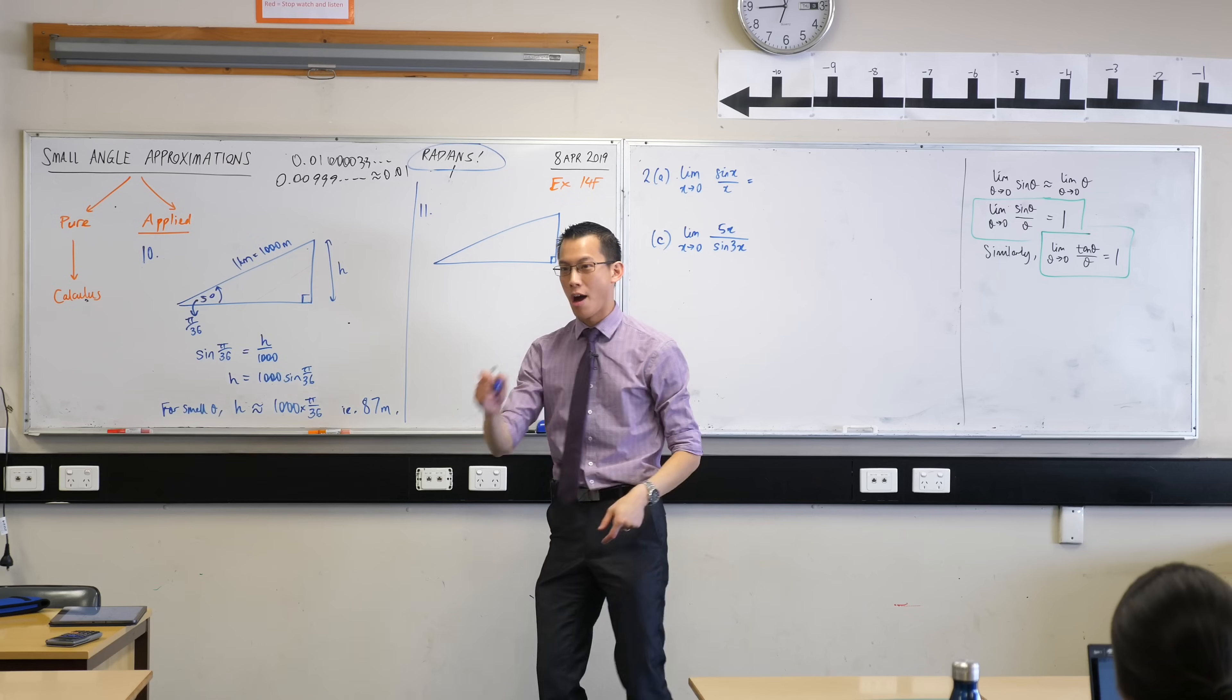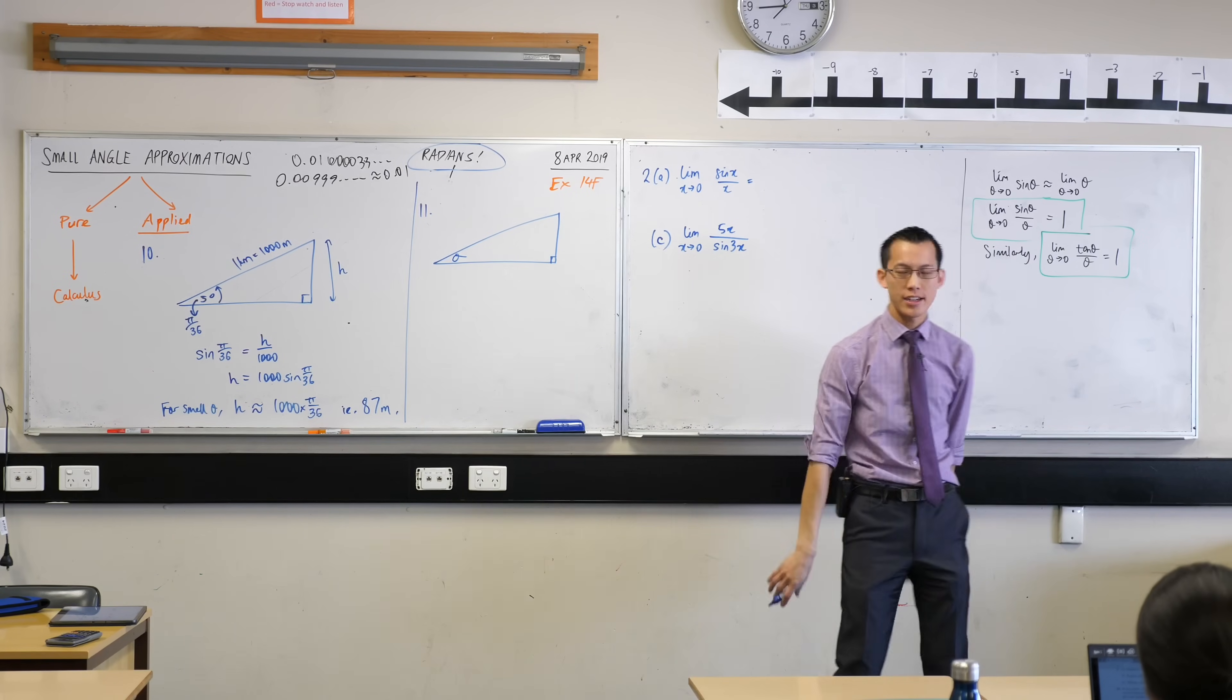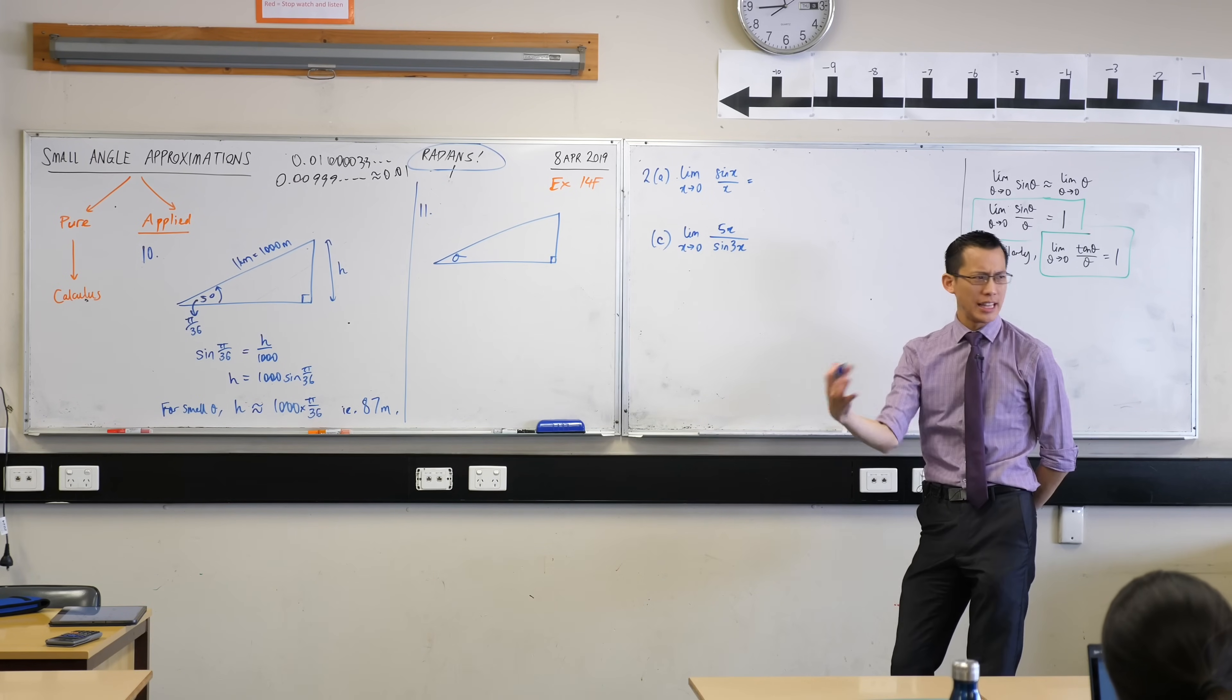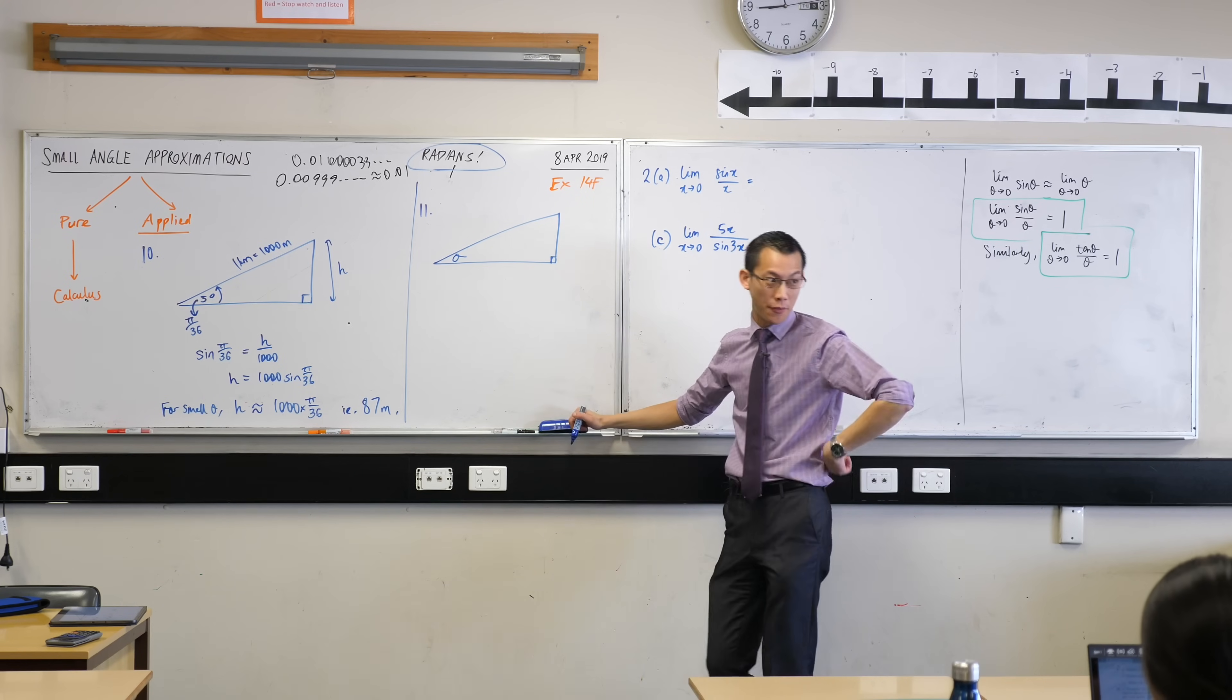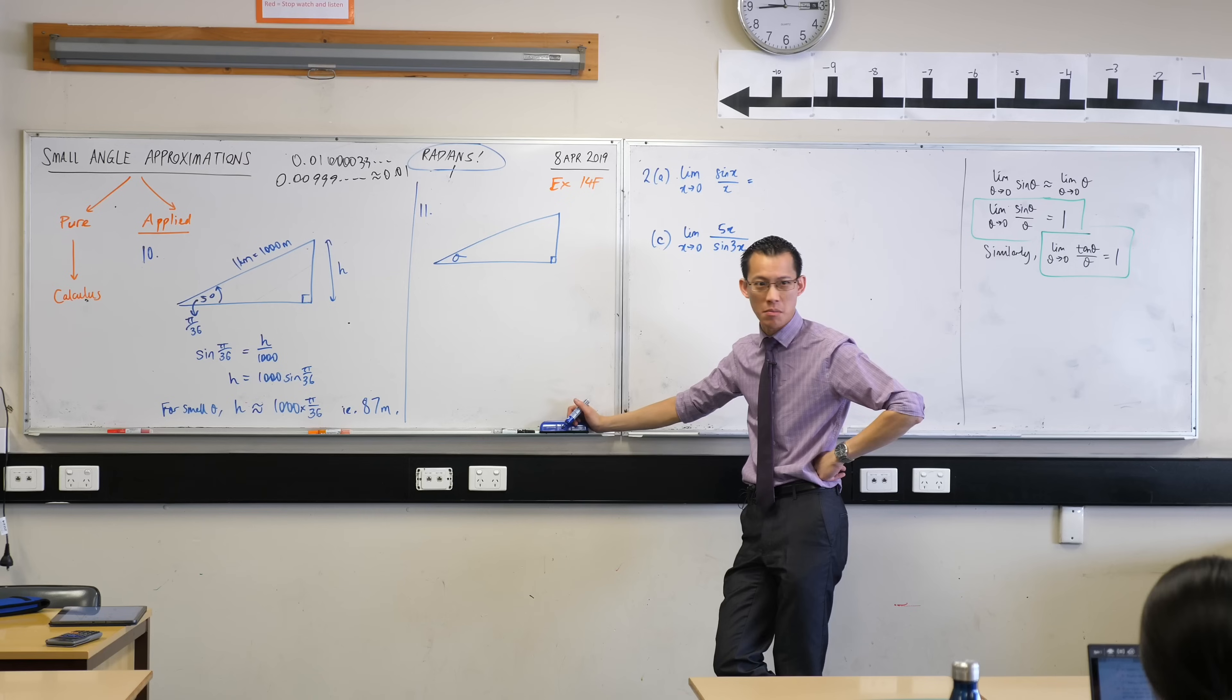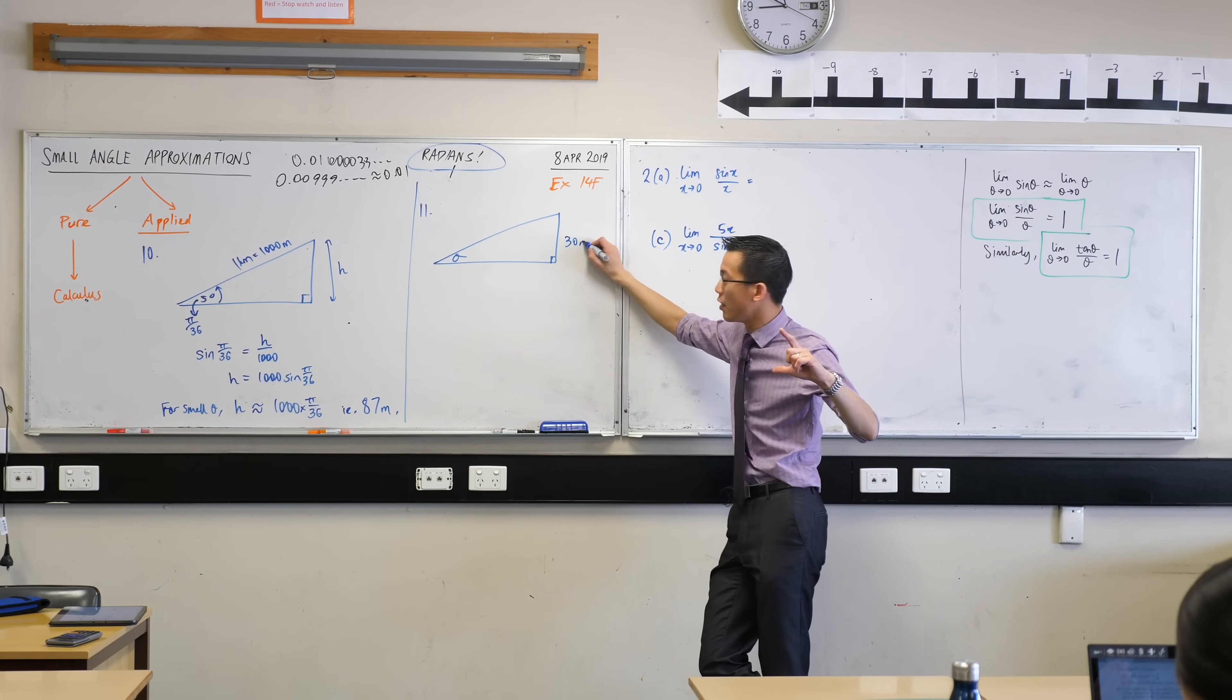Okay, so someone help me out. I will start you by saying that theta there is the unknown, so I'm just going to call it theta, and then you're going to have to give me some lengths. What lengths can we put onto here? Someone tell me the first length. 30 meters, right? Where's that? That's our height there, so I'm going to call that 30 meters.